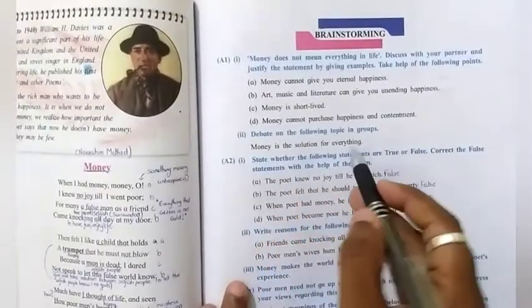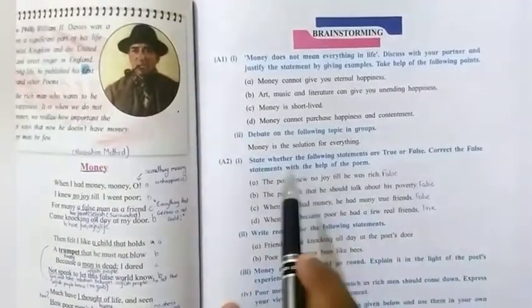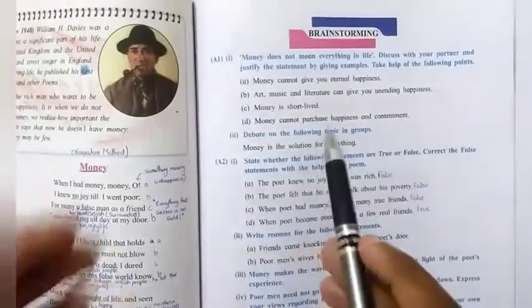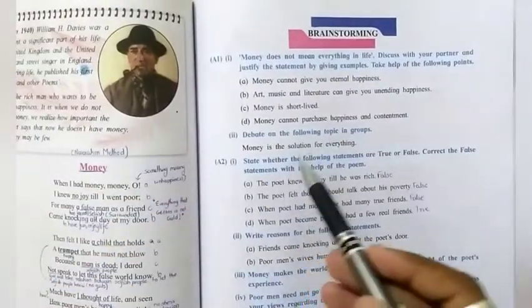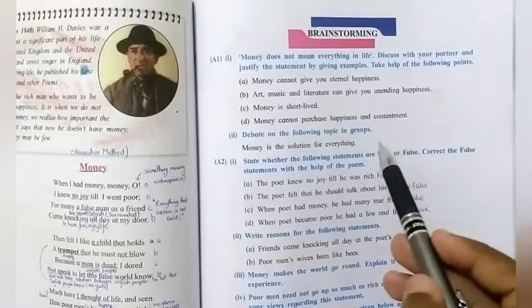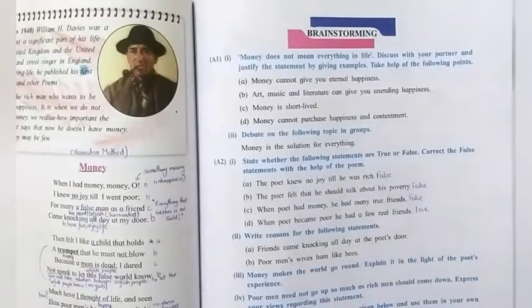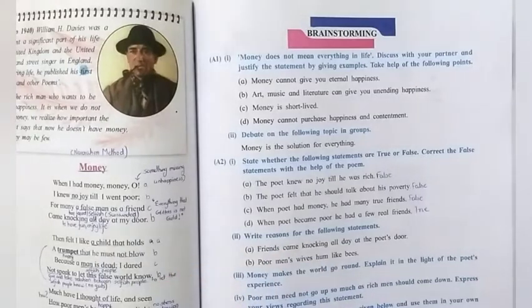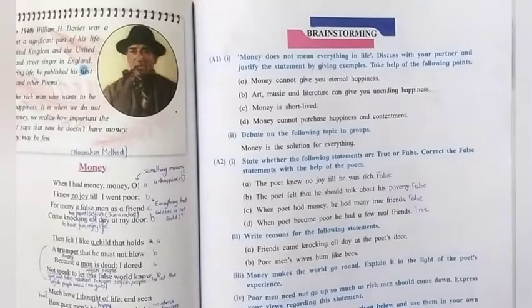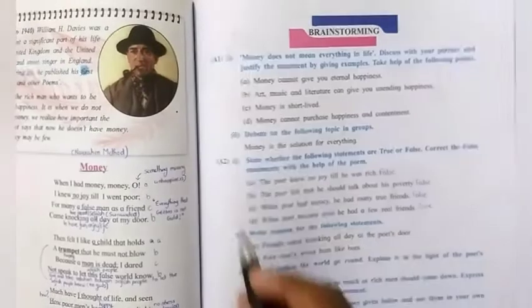The next question here is to debate on the following topic in groups. Money is the solution for everything. Now, people will write many different sentences for this particular debate the topic. But we can say that money is solution to all the problems. Money is used to move the world. With money, we can get good health care. We can get good education. We can buy a nice house. With money, we can have protection in our life. With money, we can make our life secure for the future.